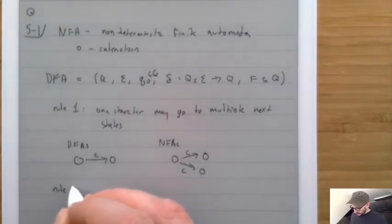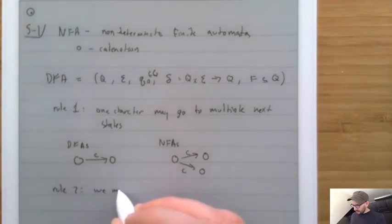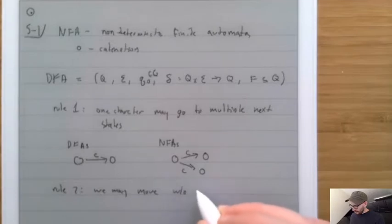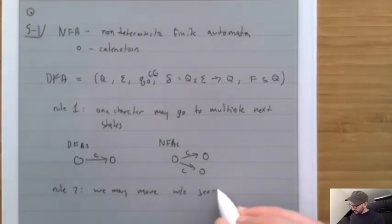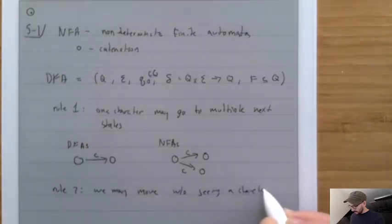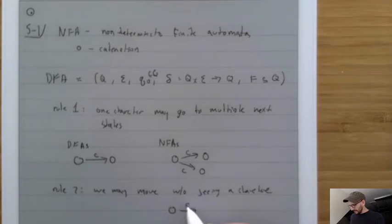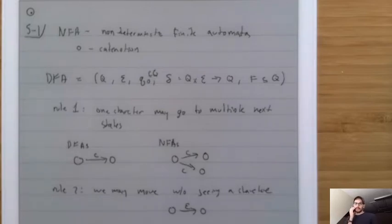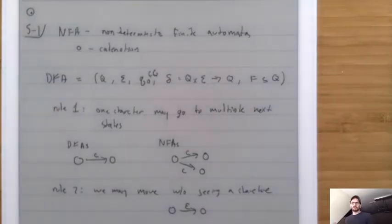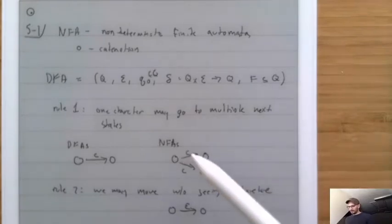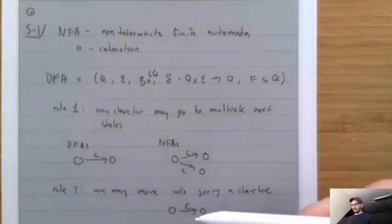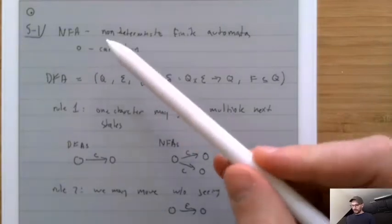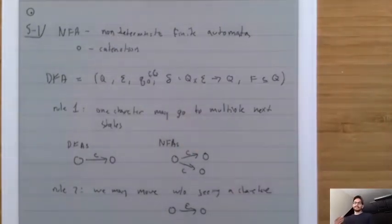Rule number two is that we may move without seeing a character. That means we can have an edge labeled with an epsilon — if it's labeled with an epsilon, we don't actually need to see anything. Both of these new additions to DFAs are troubling, because how do we know whether we're supposed to go on the top path or the bottom path? This is why they are non-deterministic — we cannot determine necessarily which way it's supposed to go.